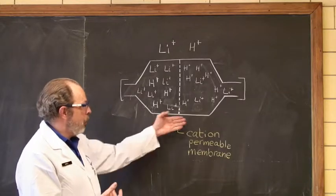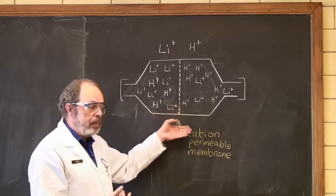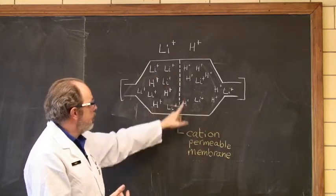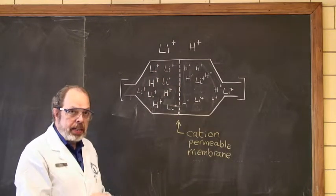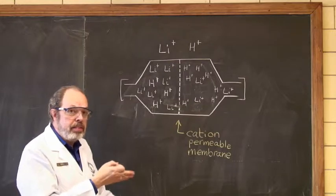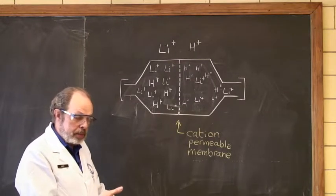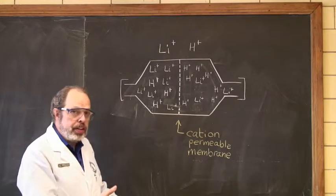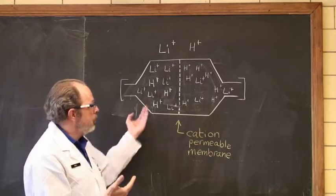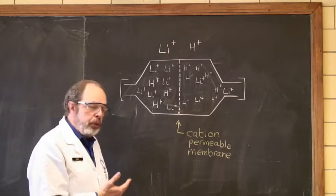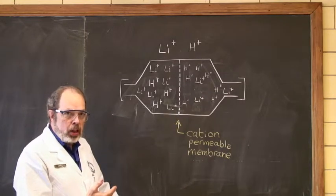So at the end of the diffusion time, you take the contents of this side of the cell and titrate it. And you will detect that there is some H+, there is some acid present. And that's how you're going to determine how much lithium, because it's a stoichiometric ratio, migrated through the membrane in the opposite direction.